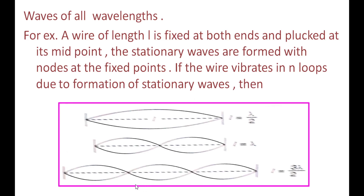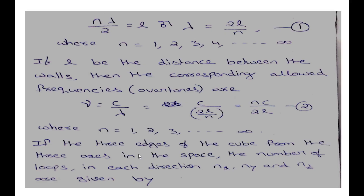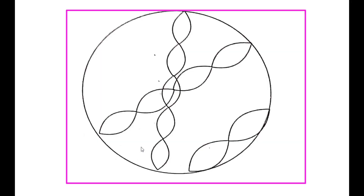The radiations, according to the electromagnetic theory, are in the form of waves with wavelength and frequency. The waves travel in all possible directions within the enclosure.